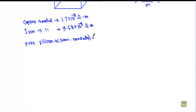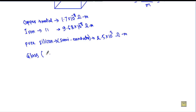Pure silicon, which is a semiconductor, has a specific resistivity of 2.5 × 10³ ohm meter. An insulator such as glass has a specific resistivity ranging from 10¹⁰ to 10¹⁴ ohm meter.